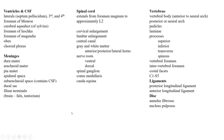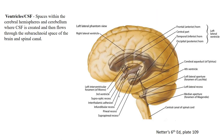Here is the list of required items to know for the upcoming exams: ventricles and CSF, meninges, spinal cord, vertebrae, ligaments, and discs. Those are the items you should be familiar with. Let's take a look at the ventricles.